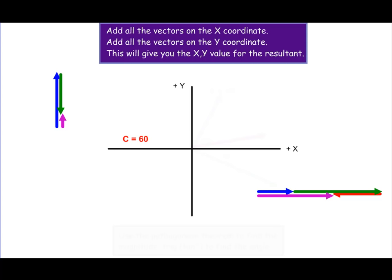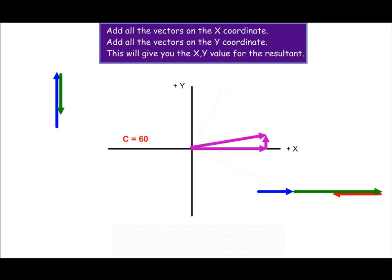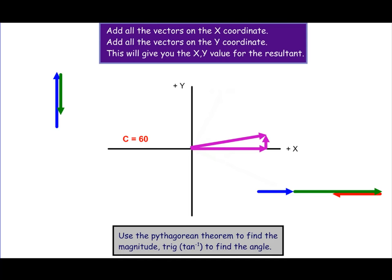These two vectors are the legs of a right triangle that define the resultant. Taking the sum of all the x's on the x-axis and the sum of the y's placed head to tail, our resultant is this vector right here. You can use the Pythagorean theorem to find the magnitude of that vector, and then use the tangent function to find its precise direction.